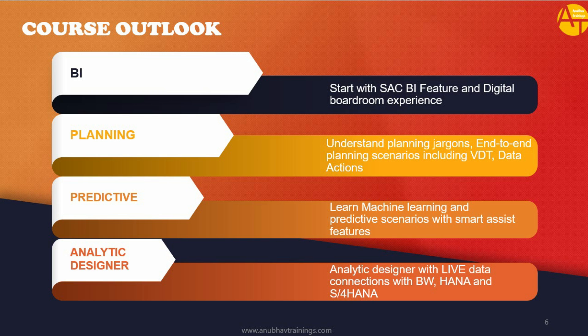In the BI phase, we will learn BI features including the digital boardroom experience, and cover the basics of measures, dimensions, models, and modeling types — BI model, planning model, acquired model, live model, and the new model concept. Moving to planning, we will learn planning jargons including end-to-end planning scenarios like simulations, allocations, data actions, and value driver trees.